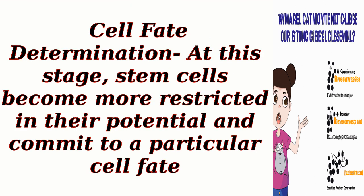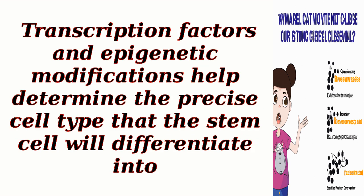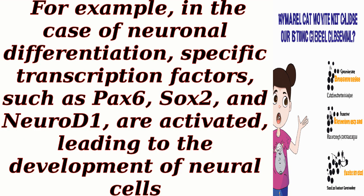Cell fate determination: At this stage, stem cells become more restricted in their potential and commit to a particular cell fate. Transcription factors and epigenetic modifications help determine the precise cell type that the stem cell will differentiate into. For example, in the case of neuronal differentiation, specific transcription factors such as Pax-6, Sox-2, and Neuro-D1 are activated, leading to the development of neural cells.